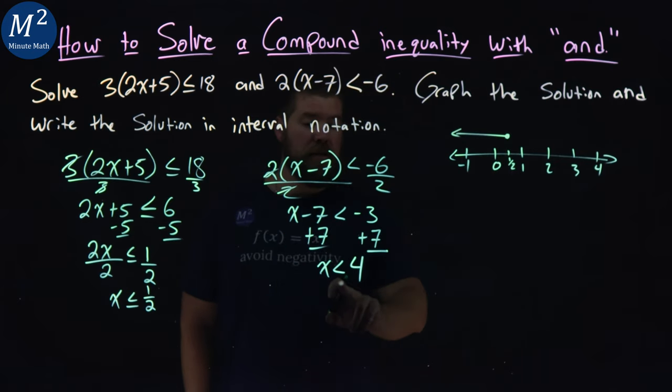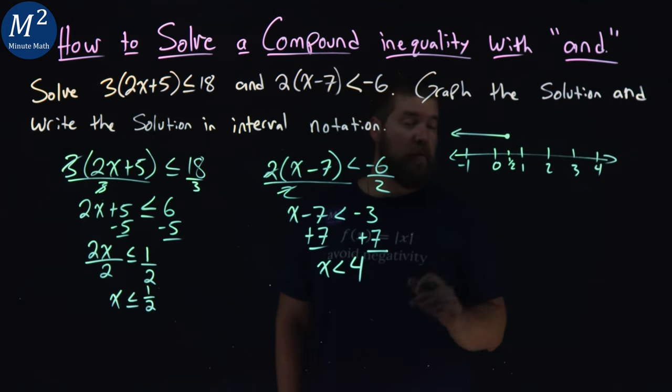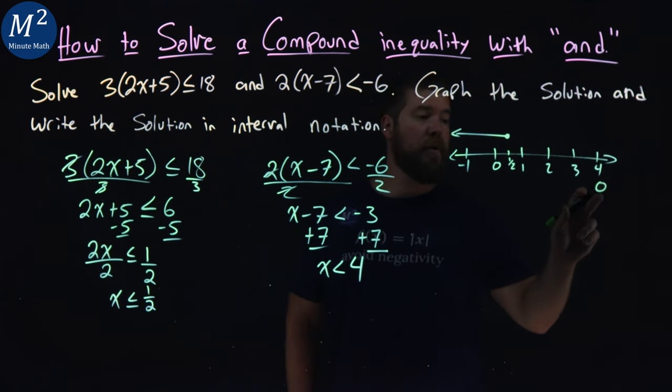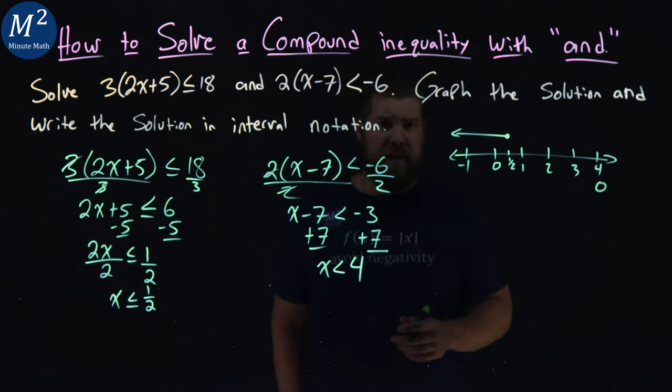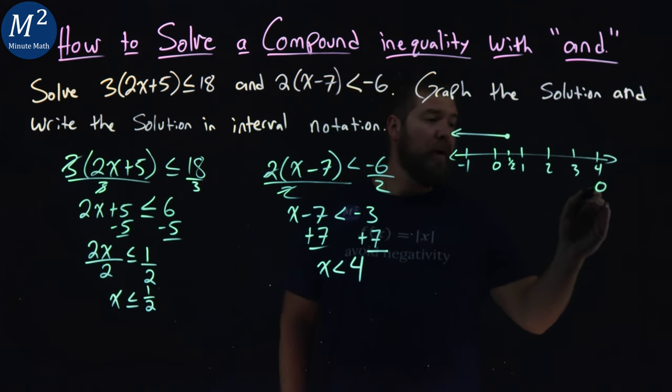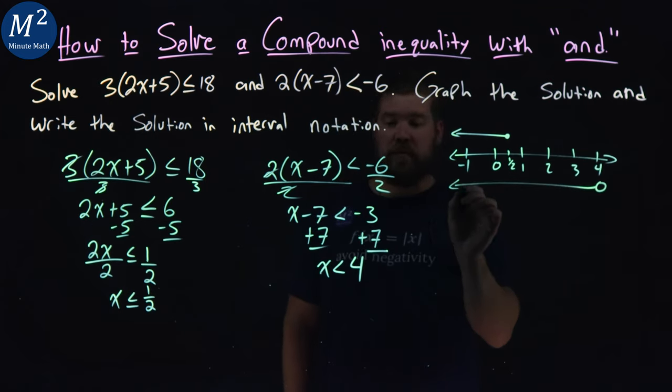The second equation here, we have that at 4. It's not equal to 4, so we have an open circle at 4. I'll put below. But x is less than that as well, so we have to go like this, to the left.